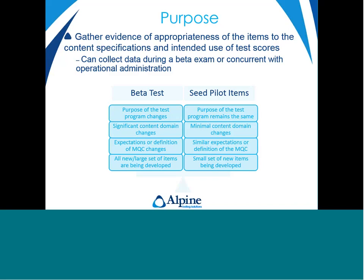When we're discussing beta testing, what are we really talking about? Essentially, we're looking to gather evidence on the appropriateness of the items to the content specifications and the intended use of test scores. It answers the need to collect statistical data on item performance prior to the score status of those items. There are multiple ways you may collect data on items after they're being delivered — perhaps in a beta exam, or in a circumstance where you have an operational exam but a content area that needs upgrading.